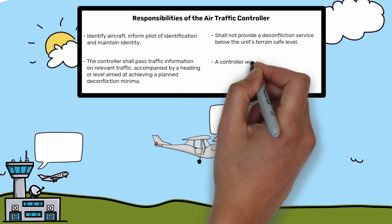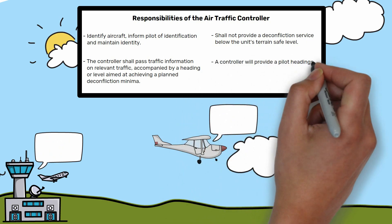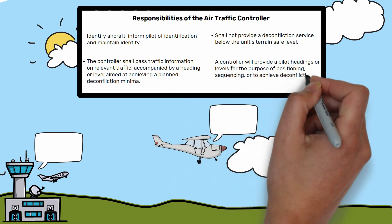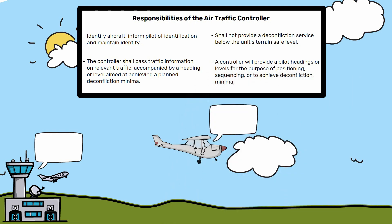A controller will provide a pilot headings or levels for the purpose of positioning, sequencing, or to achieve a deconfliction minima. When following a controller's heading or level, a pilot should not deviate from this without first advising the controller, as their aircraft may be coordinated against other airspace users.